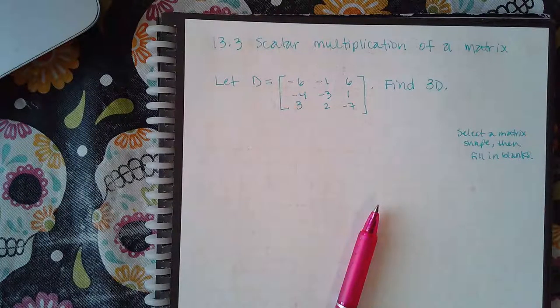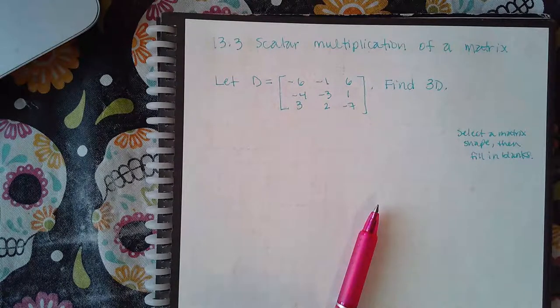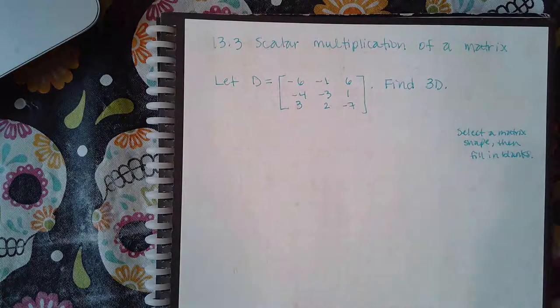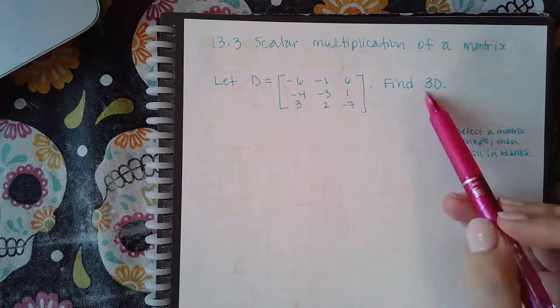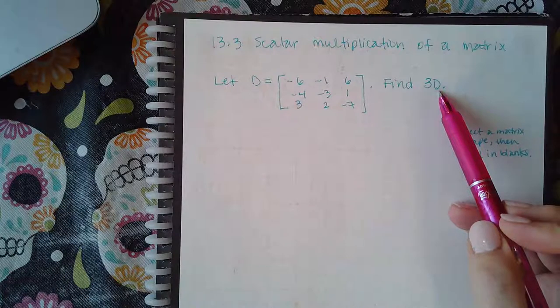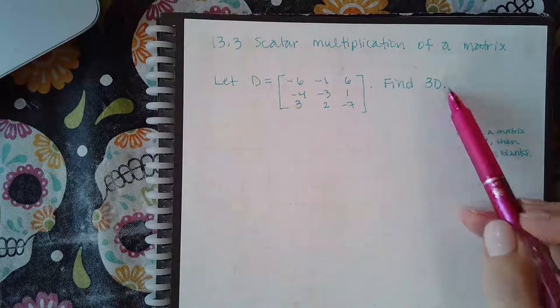Here we have 13.3 scalar multiplication of a matrix. Scalar multiplication is pretty easy because all you do is take a real number and multiply it by your matrix. What that turns out to become is just that number